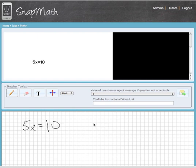And that's easy. We can just say that x equals 2, or we can get x by itself by dividing each side by 5.